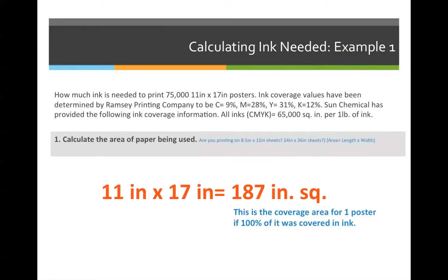Let's walk through the steps one at a time. Step one, calculate the area of paper being used. To calculate this, you should have multiplied 11 times 17 because that's the size of the paper that we're printing. 11 times 17 is 187 inches squared. That assumes we're printing 100% ink coverage, which we're not. So that takes us to step number two.